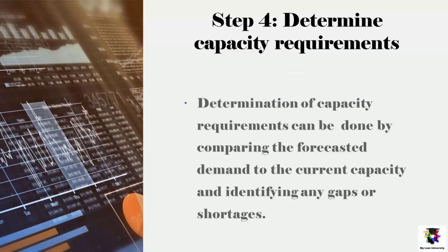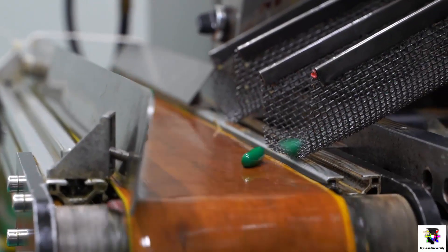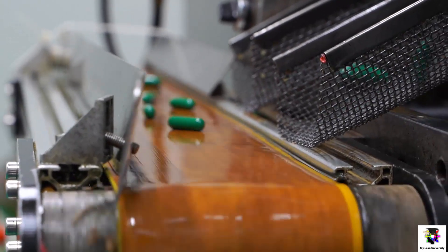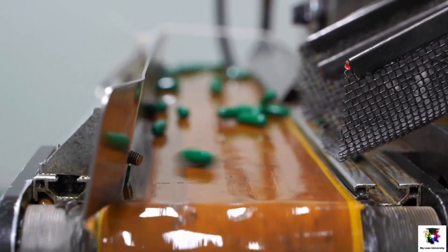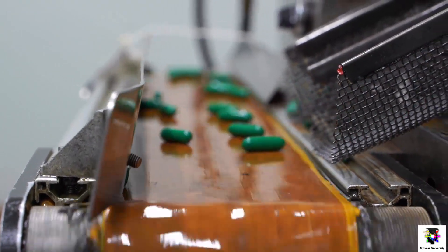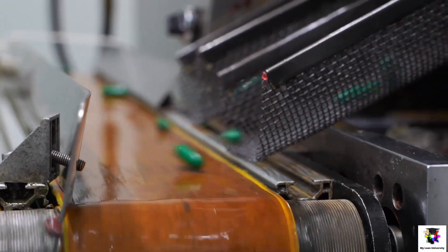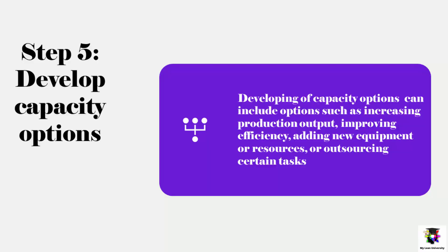Step number four is to determine the capacity requirements. With the forecasted demand and the current capacity in hand, the next step is to determine the capacity requirements for the business. This can be done by comparing the forecasted demand to the current capacity and identifying any gaps or shortages. For example, if a manufacturing company forecasts that they will need to produce 50 units per day but their current capacity is only 40 units per day, they will need to increase their capacity by 10 units per day to meet the demand.